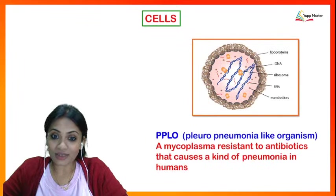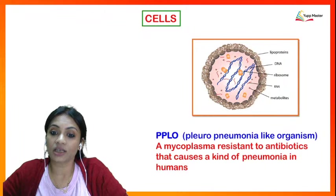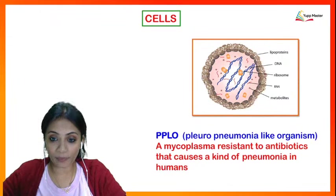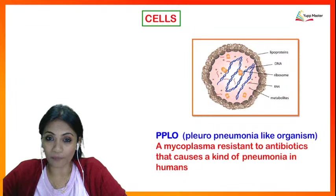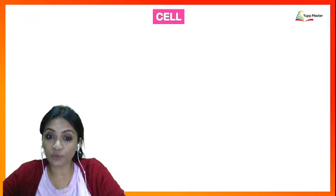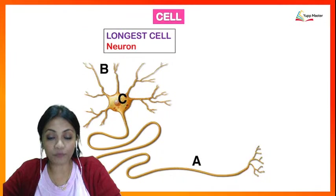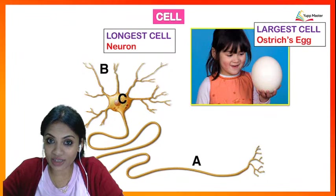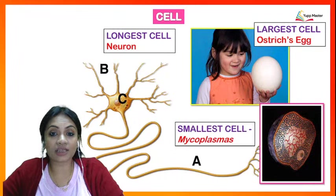There is a cell called PPLO, also known as pleuro-pneumonia-like organism. This is actually a mycoplasma and it is resistant to antibiotics. It is in fact the smallest bacteria and it causes a kind of pneumonia in human beings. The longest cell in the human body is that of a neuron, the largest cell ever is an ostrich egg, and the smallest cell is that of a mycoplasma.